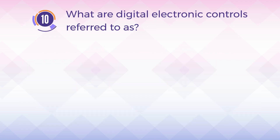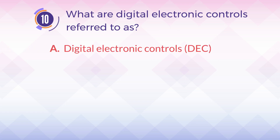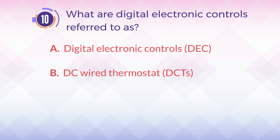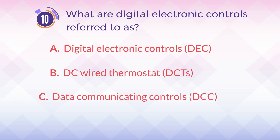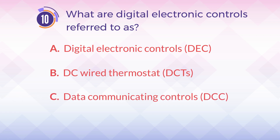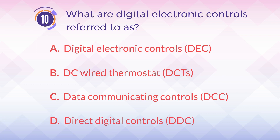Number 10. What are digital electronic controls referred to as? A. Digital electronic controls, DEC. B. DC wired thermostat, DCT. C. Data communicating controls, DCC. D. Direct digital controls, DDC.